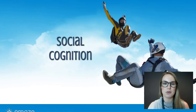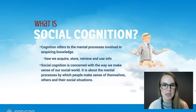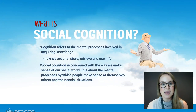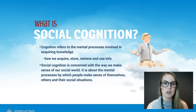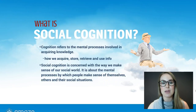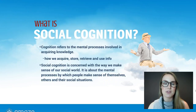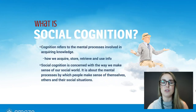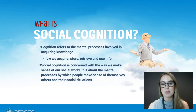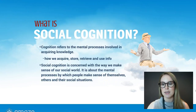So social cognition — what is it? Cognition in general refers to the mental processes involved in acquiring knowledge: how we acquire, store, retrieve and use information. People sometimes refer to cognition as thinking in general. Social cognition more specifically is concerned with the way that we make sense of the social world around us — the mental processes by which people make sense of ourselves, others, and the social situations around us.